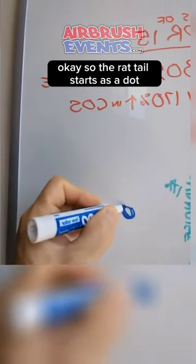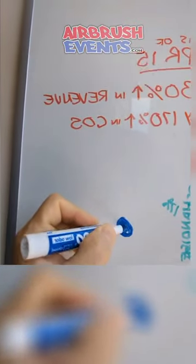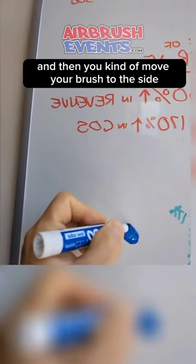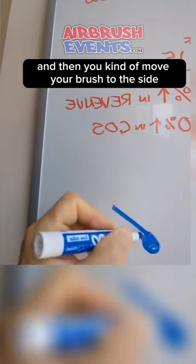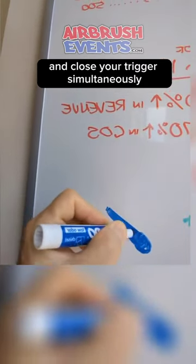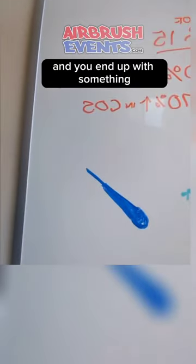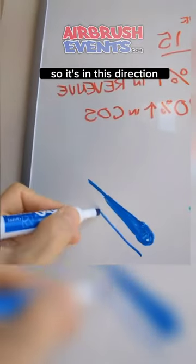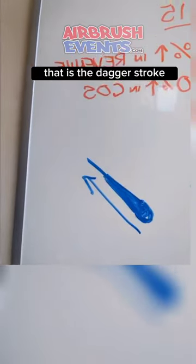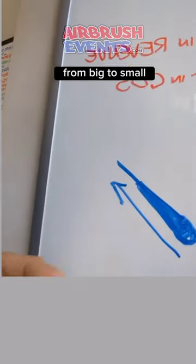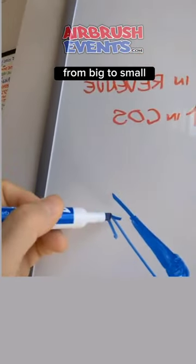Okay, so the rat tail starts as a dot. You hold the airbrush in one position, and then you move your airbrush to the side and close your trigger simultaneously. You end up with something that looks like this - that is the dagger stroke from big to small.